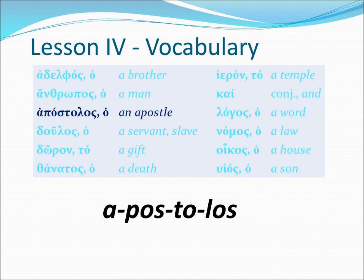Our next word in the vocabulary list is apostolos, translated to mean 'an apostle.' The article ho is a masculine article, which shows us that apostolos is a masculine noun. Ho apostolos would mean 'the apostle.'